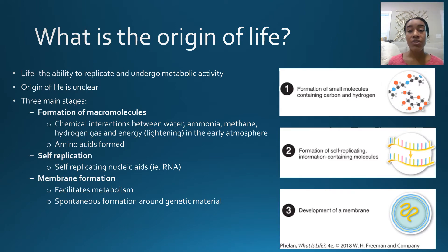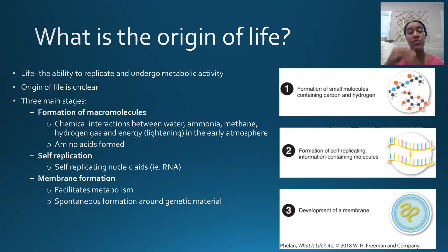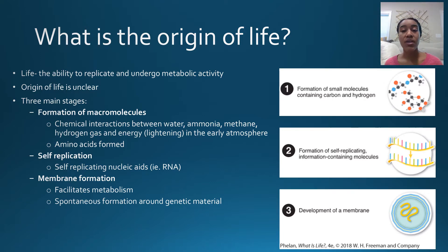The third big hypothesis about how life began involves the ability to undergo metabolic activity, and this is through membrane formation. Membranes are very important for metabolism. They are the mechanism by which the movement of molecules across membranes is how species undergo metabolism. The idea is that the membrane may have formed around nucleic acids in the environment spontaneously, and that is what led to the first cell.